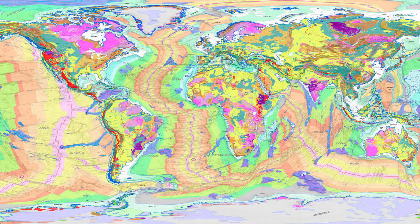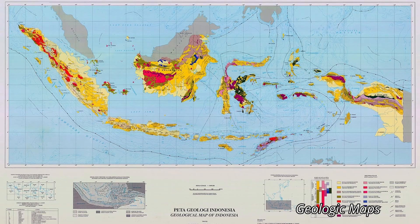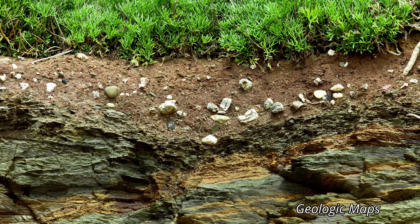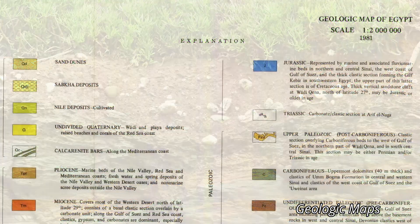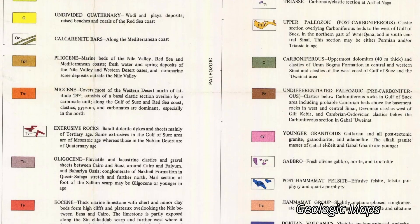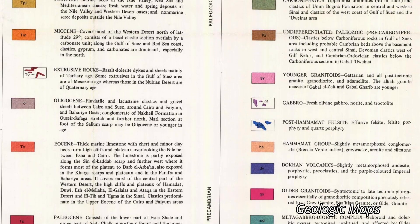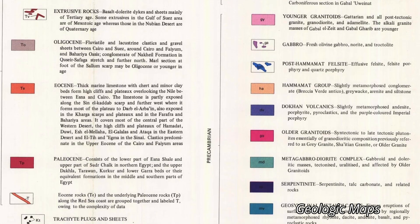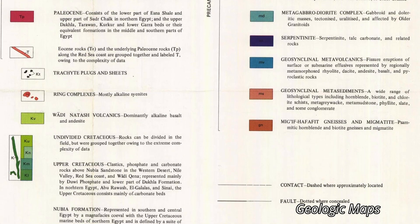Geologic maps are very useful to the geotechnical engineer when evaluating the large-scale soil and rock environment to be dealt with in a project. Geologic maps are graphical representations of rocks, sediments, and other geologic features observed or inferred to exist at or beneath Earth's surface. These maps typically have a scale from 1 to 10,000 to 1 to 100,000 and show the base rock or geologic unit and major geologic features.